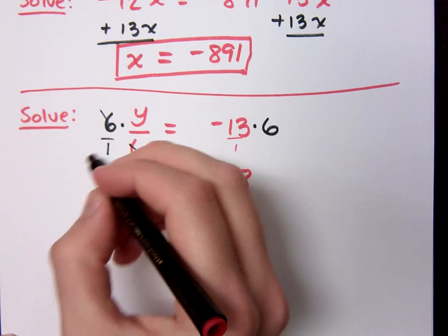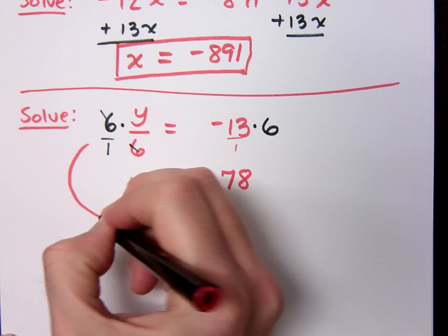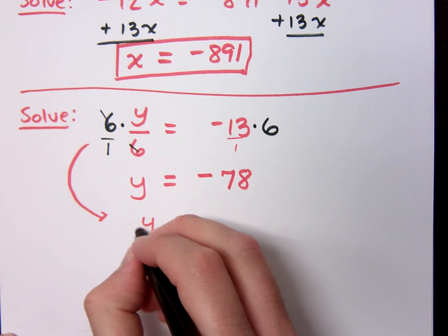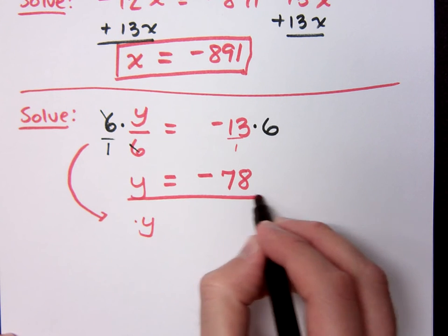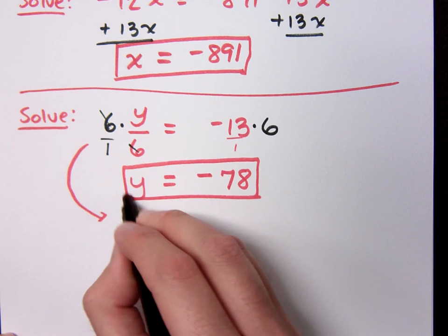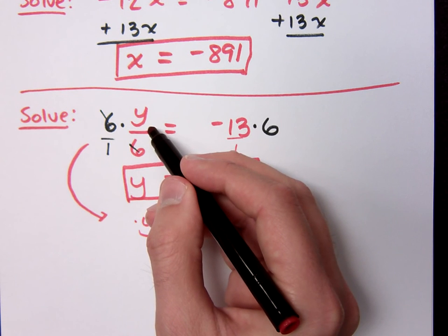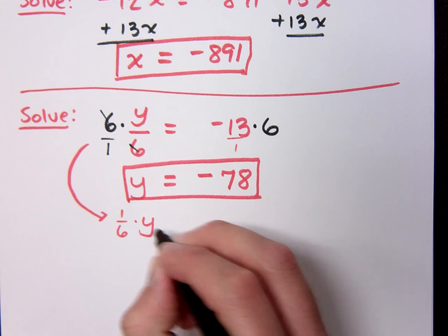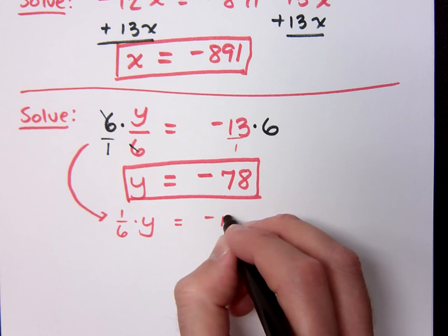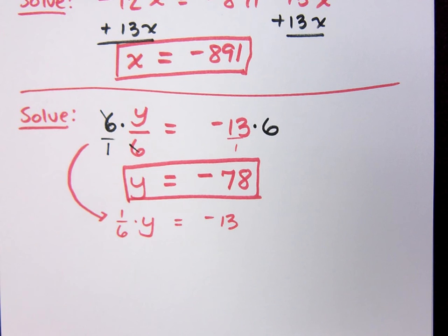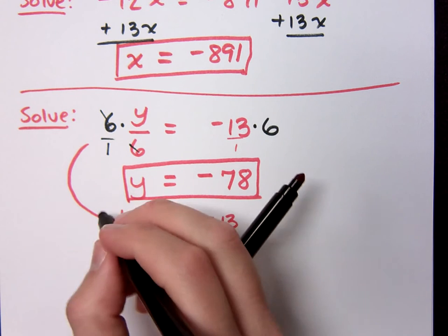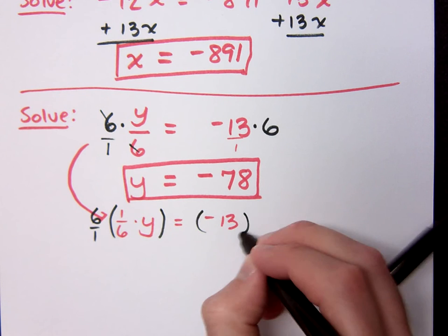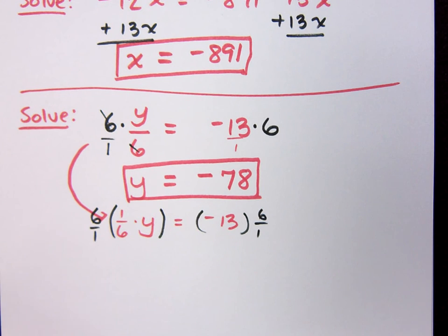So if I were to rewrite this guy, y over 6 is the same thing as what times y. What is the coefficient of this term right here? The coefficient is 1 over 6, right? So if I do what we had just seen earlier today, then I would multiply times the reciprocal here, which is 6 over 1.